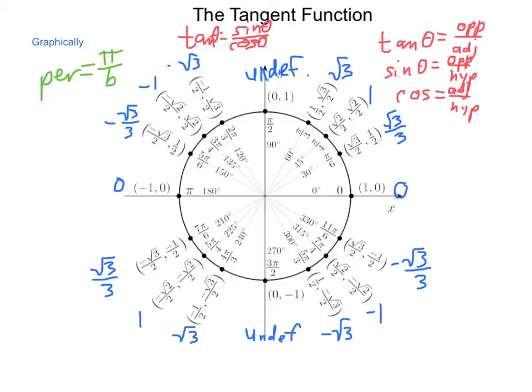Because we repeat every pi units. One cycle normally occurs from negative pi over 2b to pi over 2b, and there's asymptotes at the end of each cycle.